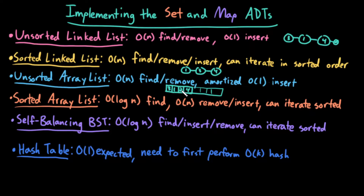To do N insertions, we do roughly 2N operations total, so divided by the number of operations, it's roughly constant time per insertion. So amortized, it's constant time to insert. But again, they're not in any given order, so I can't iterate over them in any clean fashion.